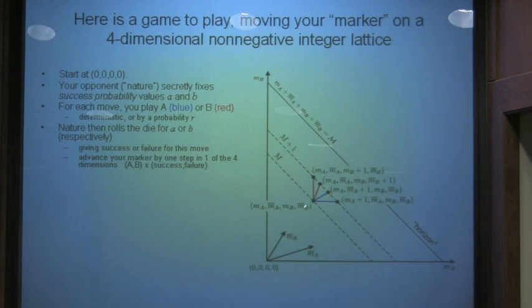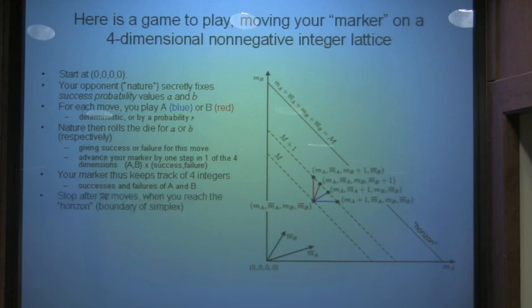The four possible moves are, if we chose strategy B and it succeeded, we would add one to the third position. If we chose strategy B and it failed, we would add one to the fourth position. Likewise, strategy A, either it succeeds, in which case we add to the first position, or it fails, in which we add one to the second position. The marker keeps track of the successes and failures of A and B.